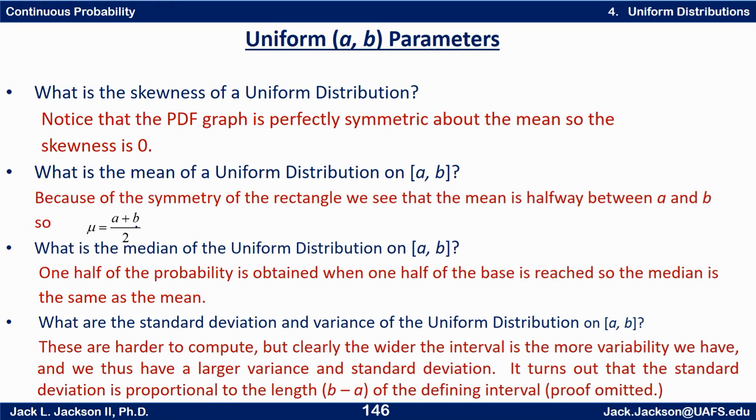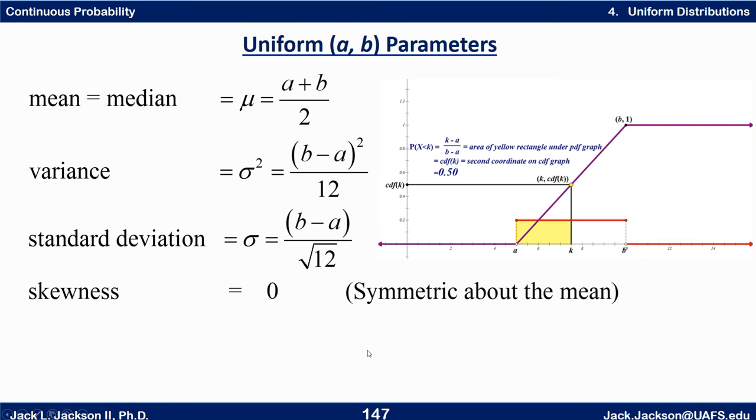Now it turns out that the standard deviation and variance of the uniform distribution are quite a bit harder to compute on interval a b. But it should be clear to you that the wider the interval is the more variability we have. So a larger variance and larger standard deviation comes if we have a larger interval from a to b. So it turns out the standard deviation is actually proportional to the length b minus a of the interval. And I'm not going to prove that to you right now. But it turns out to be this.